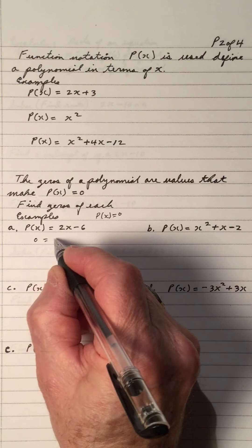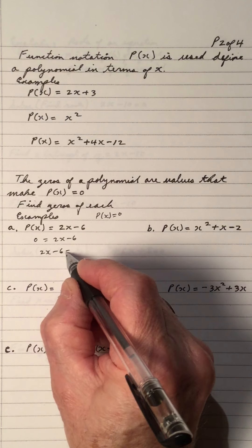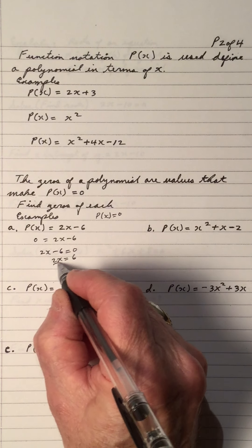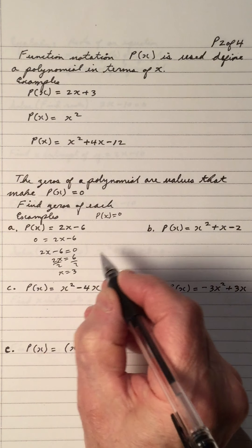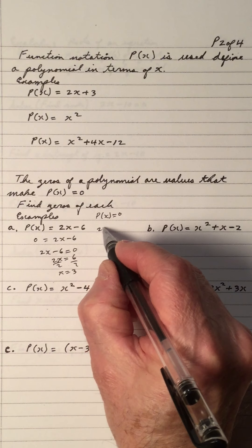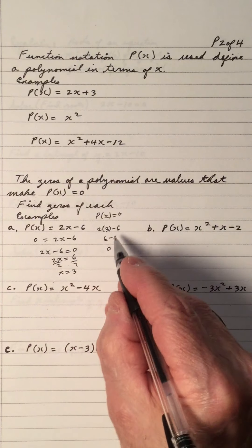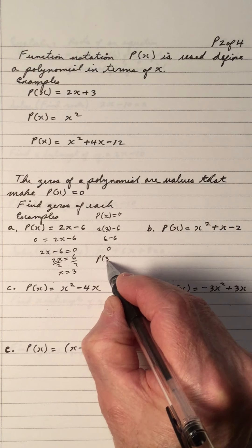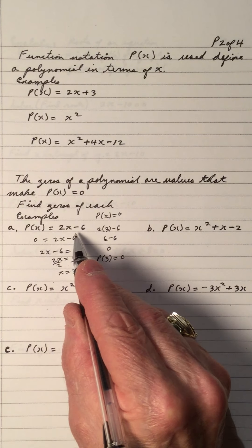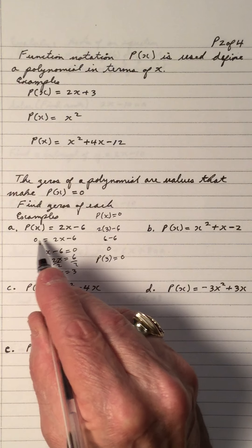So we make the P of X equal to zero and solve the equation. So 2X minus 6 equals zero. 2X equals 6 — move it over and make it positive, divide by 2, so X equals 3. If you sub 3 back in, 2 times 3 is 6, and 6 minus 6 is zero.